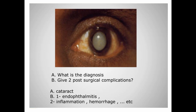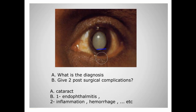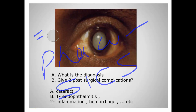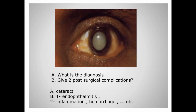This is a very important station that always comes in the exam. Look at the picture — there is a white mature cataract; this will be your diagnosis. What are the complications of cataract surgery? They include subconjunctival hemorrhage, posterior capsular tear, vitreous loss, endophthalmitis, and damage to the iris. Different procedures for cataract surgery are extracapsular cataract extraction, phacoemulsification, and small incision cataract surgery (SICS).